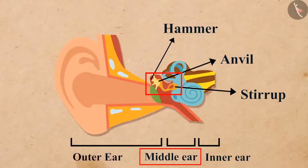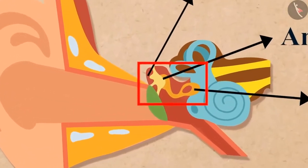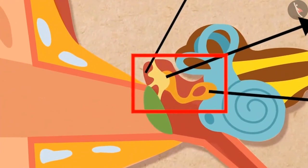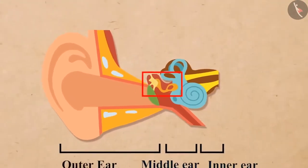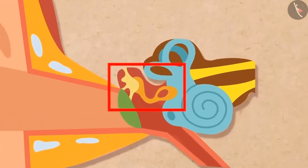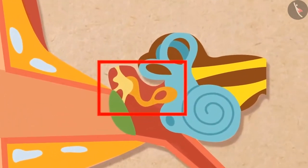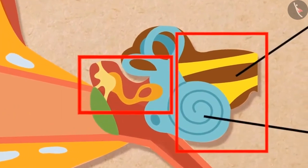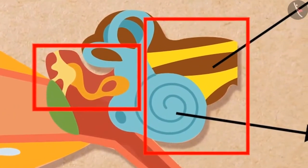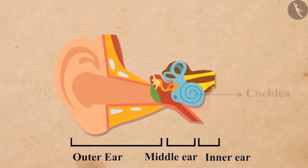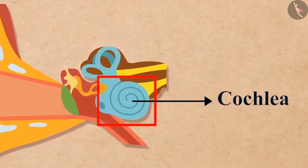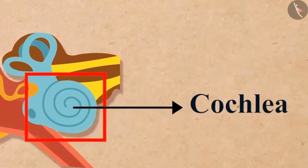Then the three bones — the hammer, the anvil, and the stirrup — of the middle ear amplify the vibrations. After that, the middle ear transmits the amplified pressure variations received from the sound wave to the inner ear. The cochlea of the inner ear turns the pressure variations into electrical signals.